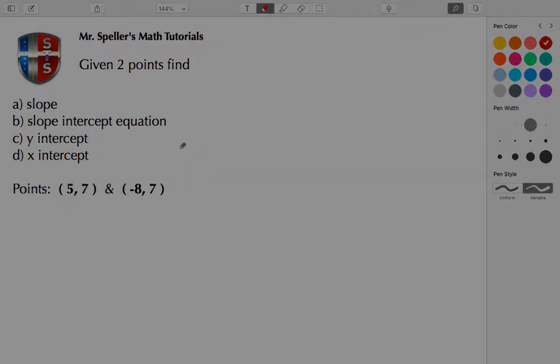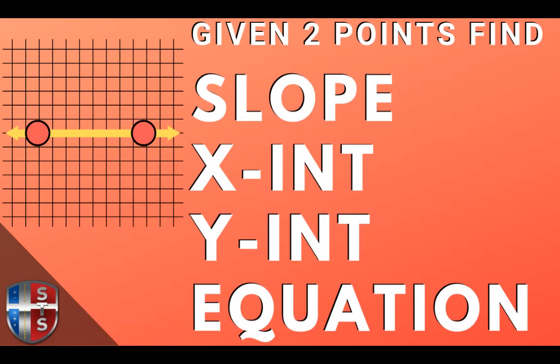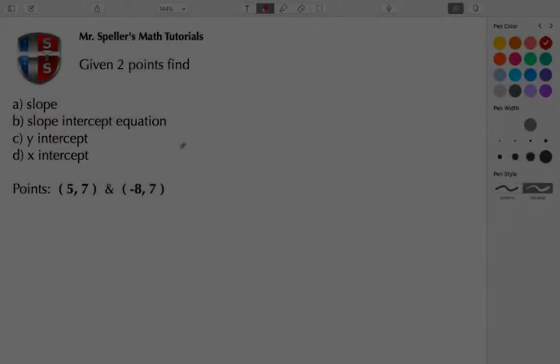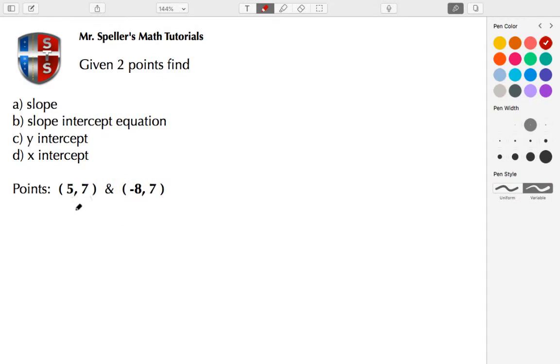All right, let's get started. We're going to begin by finding the slope. We see that by saying M is equal to ΔY divided by ΔX, or the change in Y divided by the change in X.